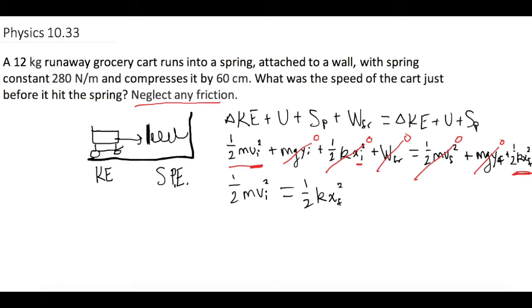Now let's make a list of what they gave us. They tell us the mass of the cart is 12 kilograms. We're solving for initial velocity, so we don't know that. They tell us the spring constant K is equal to 280 newtons per meter. And they tell us the spring is compressed by 0.6 meters.